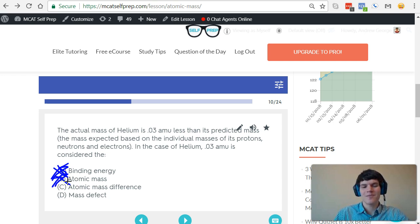The atomic mass difference is simply a distractor term. That's not a term that you need to know. And finally, mass defect is the proper term for the difference in the predicted mass and the actual mass of helium. So, that is going to be our correct answer.